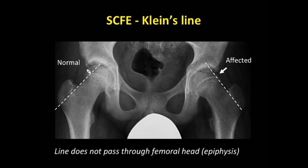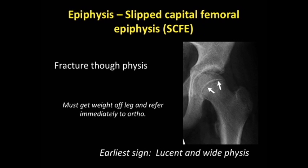One way to identify this lesion is with Klein's line. You draw a line along the lateral aspect of the femoral neck. On the normal side, some of the epiphysis is lateral to the line, but on the affected side, because of that small slip, there's not as much of the epiphysis outside this line. Even though it's in the epiphyseal part of this talk, it's really a lesion of the physis — a deficiency of the physis that allows the epiphysis to slip off. The importance of early identification is that you want to get them off weight-bearing immediately. Even if they have a chronic history of pain, it's important to get them off right away before further damage occurs.